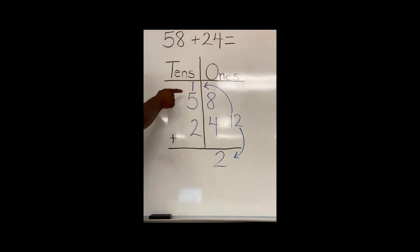Now, I have one ten plus five tens plus two tens. One ten plus five tens equals six. Plus two more. Seven, eight. Now, I have eight tens and two ones. My answer is eighty-two.